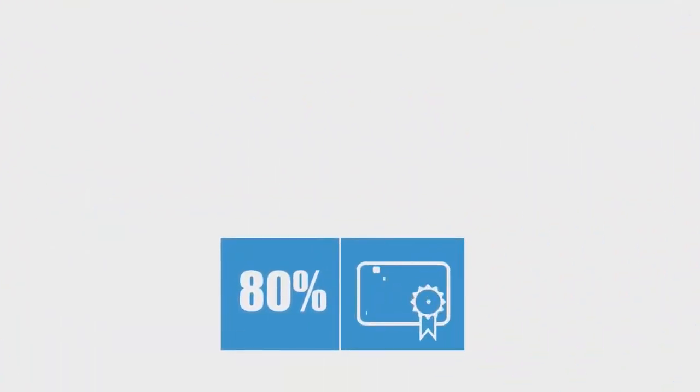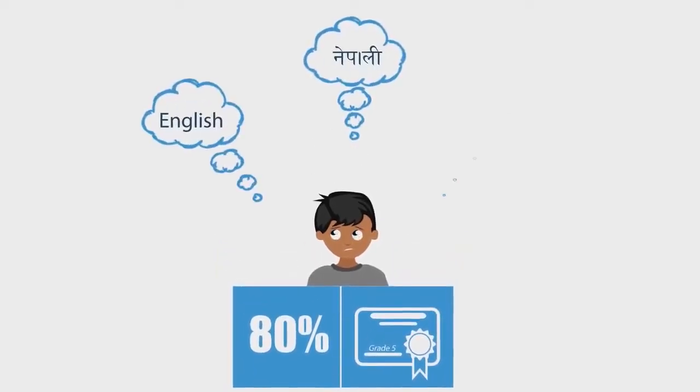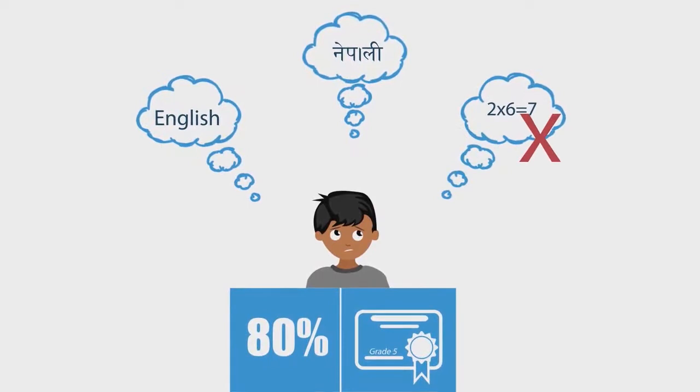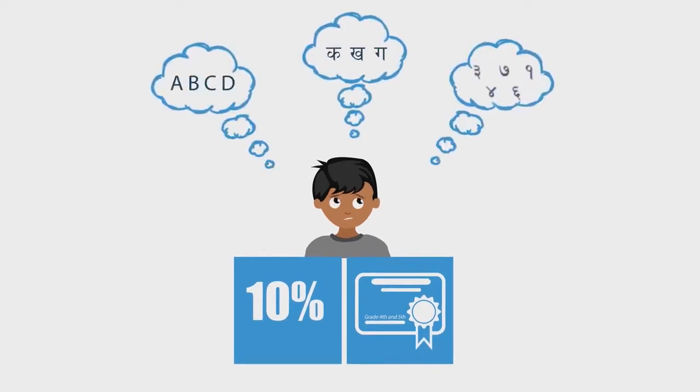The survey results show that over 80% of children who have completed 5th grade are unable to read Nepali and English and solve math problems at 3rd-grade level. Around 10% of children in 4th and 5th grade cannot read a single letter in Nepali and English and cannot recognize a single number.